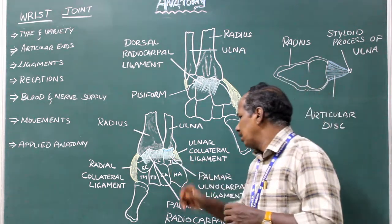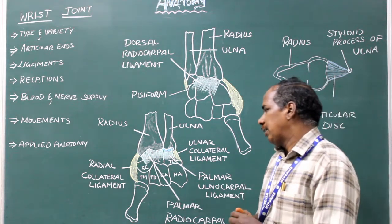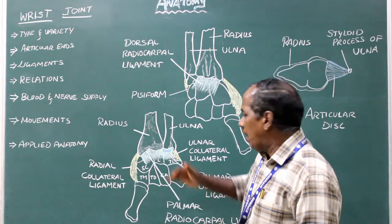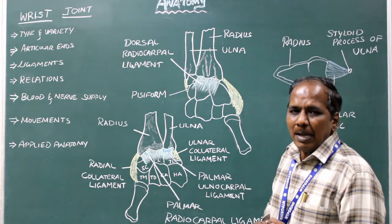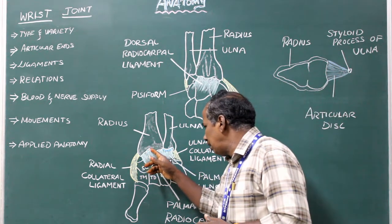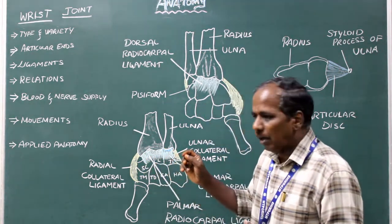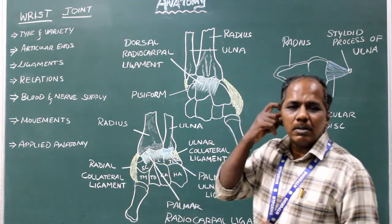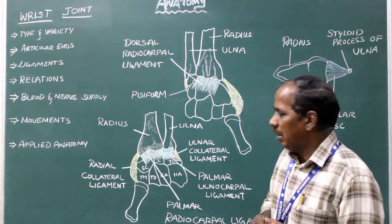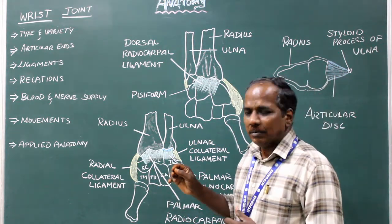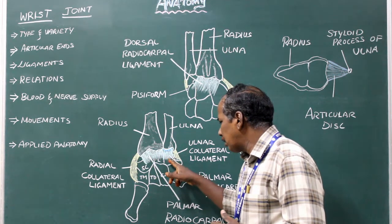Number 4: Palmar radiocarpal ligament. The fibres of this ligament run downwards and medially. Attachment: proximally it is attached to the anterior margin of the lower end of radius. Distally it is attached to scaphoid, lunate, and a few fibres to the triquetral.